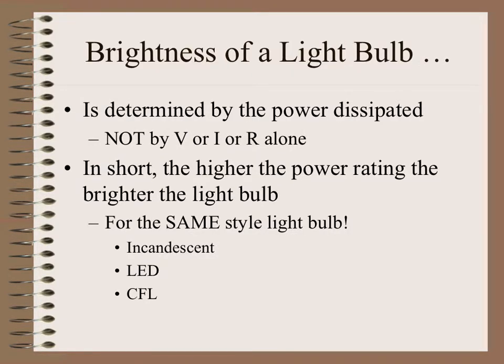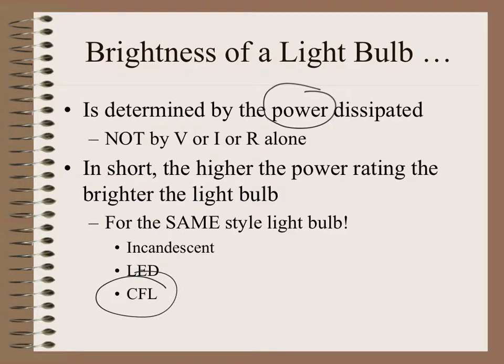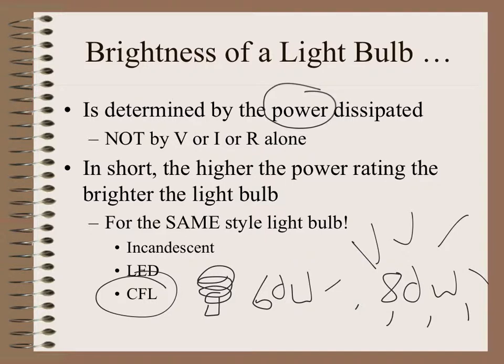The brightness of a bulb usually is dependent on solely the power that's dissipated. So, if you look at an old-school incandescent light bulb, a 60-watt light bulb versus an 80-watt light bulb, an 80-watt light bulb is going to be much brighter because it's using more power. Compare a CFL light bulb, one of those twisty, funky ones, 60-watt versus 80-watt. Again, 80-watt is going to be much brighter because it's using more power.